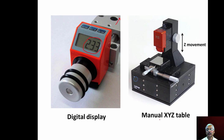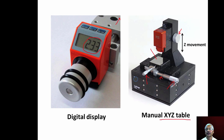A manual XYZ table operates the Z-axis using a knob, and two micrometers are provided — one for X and one for Y — so the movement of the table can be read from the main scale and thimble of these micrometers. The positioning accuracy in these cases will be like 1 to 2 micrometers depending upon the micrometer units used.